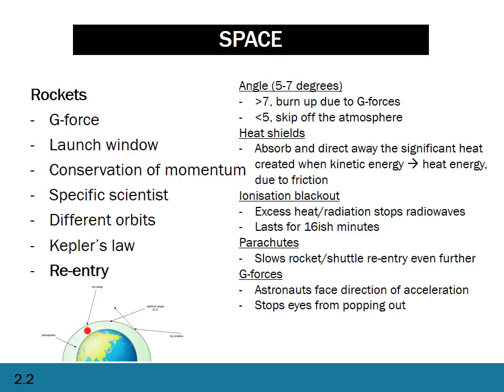Heat shields absorb and direct away the heat developed through kinetic energy converting into heat energy. There's also an ionization blackout — all of that heat causes ionization of the atmosphere around the rocket, which stops radio waves from entering the ship. It's really important to have mechanisms in place to remedy this, because if the astronaut passes out and no one can communicate with the ship for about 16 minutes, that has potentially catastrophic outcomes. You can use parachutes to slow the rocket down, and you must always ensure the astronaut is facing the direction of acceleration so their eyes don't suffer dangerous pressure.